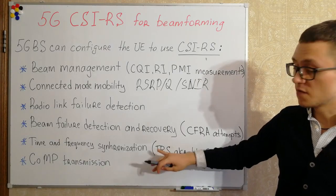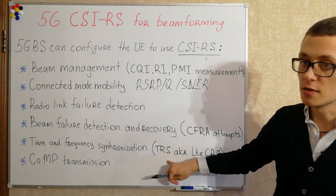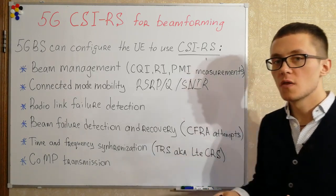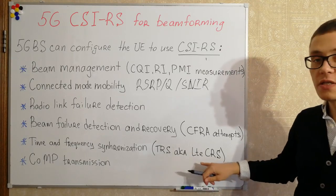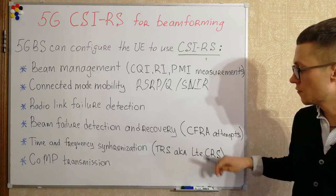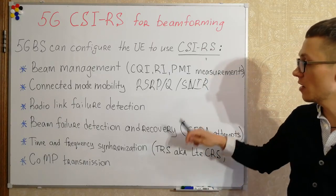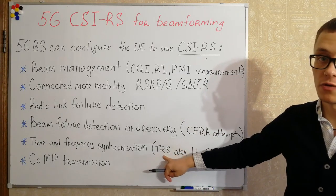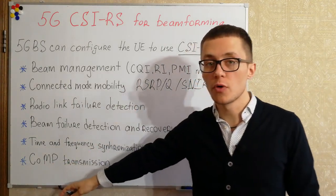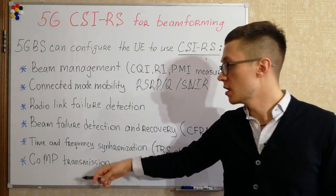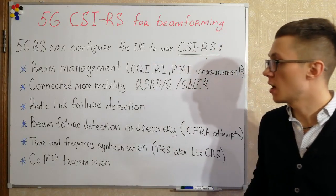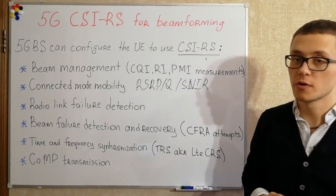Channel state information reference signals can be used for time and frequency synchronization — we can call these tracking reference signals. This is a kind of replacement for what was in LTE. In LTE we had cell reference signals for those purposes, and in 5G NR we use tracking reference signals instead. Such signals can also be used for coordinated multipoint transmission, which is a very interesting feature I will cover in future videos.